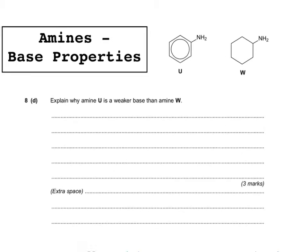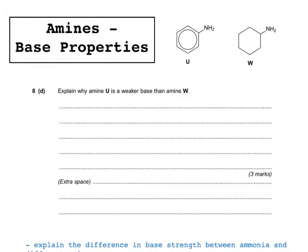Thinking about what they'll want you to write: if they're asking about phenylamine, they'll want you to focus on why it is a weaker base. If they're asking you to compare alkyl amines, they'll want you to explain the positive inductive effect from the alkyl groups around the nitrogen making it more stable. Because we've got a phenylamine here, you must focus on that. If one of the amines being compared is a phenylamine, focus on why the phenylamine is weaker. If you've got two alkyl amines, explain why one is stronger than the other via the positive inductive effect making the positively charged nitrogen more stable by pushing electrons onto it.